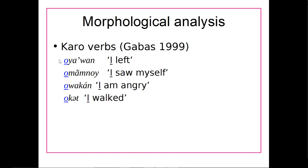Try to take a second — I've already underlined it for you — but think about what sound is similar between all of these and what that might mean. In all of these we have the sound 'o' at the start: oiawan, o-mam-noi, etc. In all the translations we have 'I left,' 'I saw myself,' 'I am angry,' 'I walked.' So the one thing in common is they start with 'o' and they all indicate an action that 'I' did. We would conclude that the sound 'o' indicates a first person subject when it's at the start of a verb.